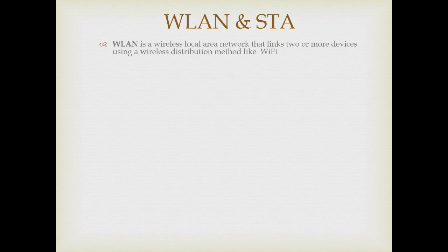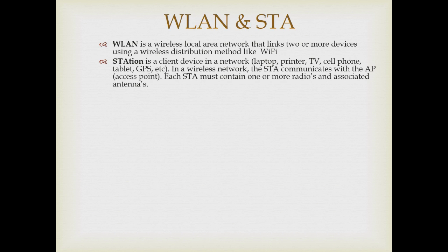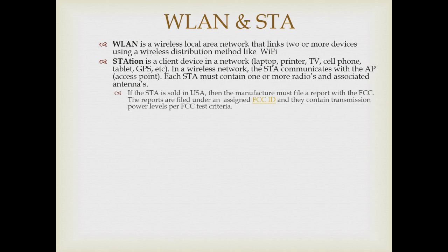A wireless local area network is a network that links two or more devices using a wireless distribution method, like Wi-Fi. A station is any client device in that network — it might be a laptop, a printer, a cell phone, or similar device. In a wireless network, the station communicates with the access point, and each station has to contain one or more radios and associated antennas. All Wi-Fi devices manufactured or sold in the U.S. must comply with FCC standards.